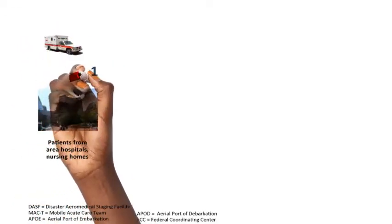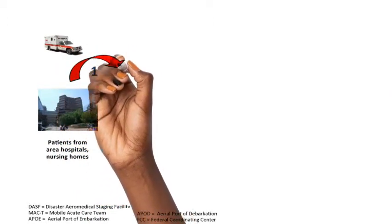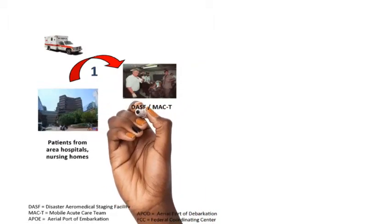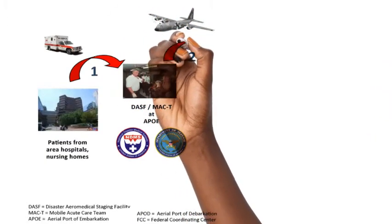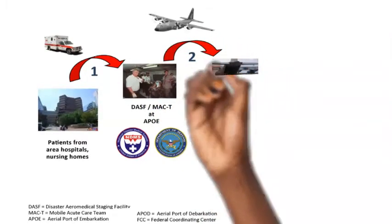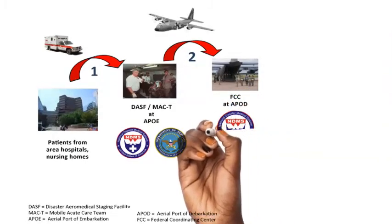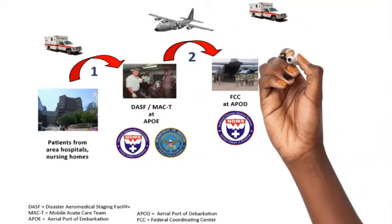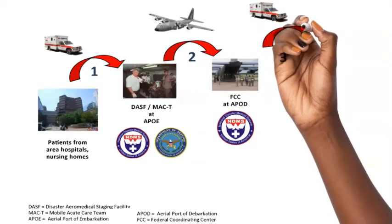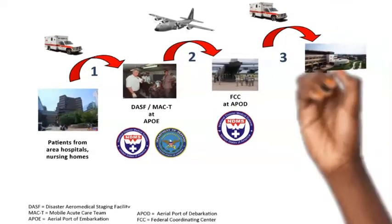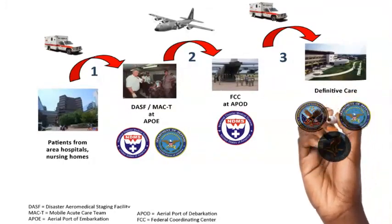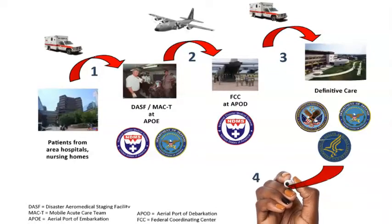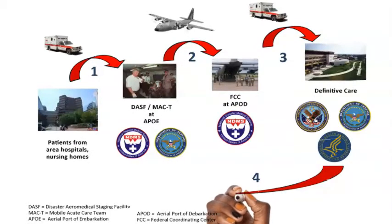Here is how the full system works: patients from field-level area hospitals, skilled nursing facilities, and impacted facilities are moved via ground ambulance to a Disaster Aeromedical Staging Facility (DAASIF). From there, they move to an Aerial Port of Embarkation, board an aircraft, and are flown to a Federal Coordination Center in a non-impacted area of the country. They are then loaded onto ground ambulances and transported to definitive care.